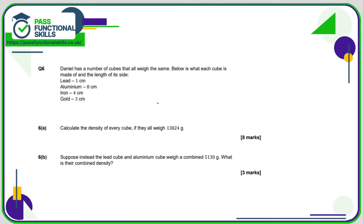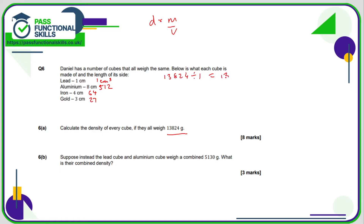Question number six - the final question. We want to calculate the density of every cube if they all weigh the same amount. We know they're cubes and we have the side lengths, so let's work out the volumes. Lead: 1×1×1 = 1 cubic centimetre. Aluminium: 8×8×8 = 512. Iron: 4×4×4 = 64. Gold: 3×3×3 = 27. Density is mass divided by volume, so lead has a density of 13,824 grams per cubic centimetre.